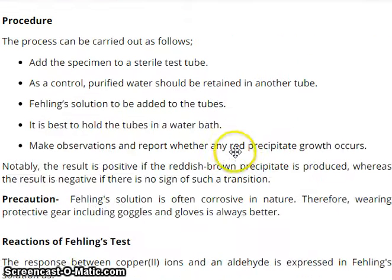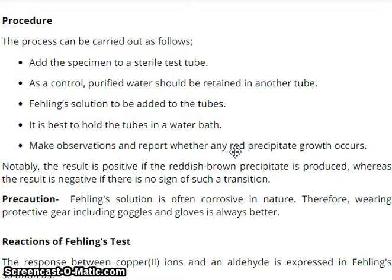Now I will talk about procedures. The process can be carried out as follows: add the specimen to a sterile test tube. As a control, purified water should be retained in another tube. Failing solution is then added to the tubes, and it is best to hold the tubes in a water bath. Make observations and report whether any red precipitate forms. The result is positive if a reddish-brown precipitate is produced, whereas the result is negative if there is no such transition.